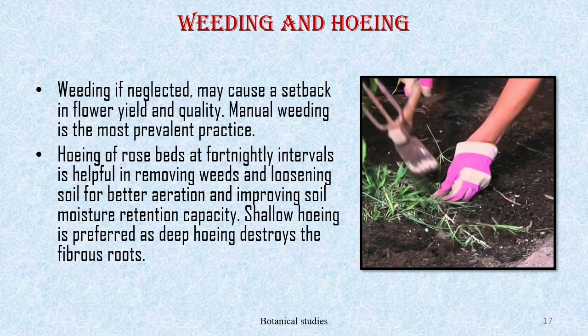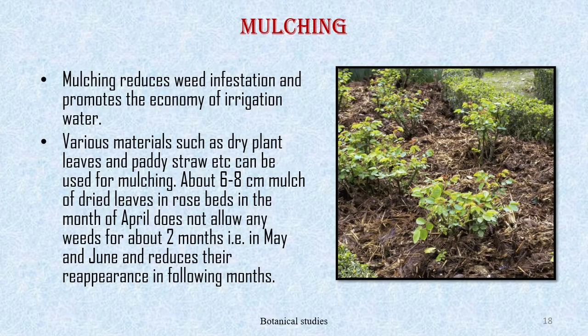Weeding and hoeing: weeding, if neglected, may cause a setback in flower yield and quality. Manual weeding is the most prevalent practice. Hoeing of rose beds at fortnightly intervals is helpful in removing weeds and loosening soil for better aeration and improving soil moisture retention capacity; shallow hoeing is preferred as deep hoeing destroys fibrous roots. Mulching reduces weed infestation and promotes economy of irrigation water. Various materials such as dry plant leaves and paddy straw can be used for mulching. About 6 to 8 cm mulch of dried leaves applied in April does not allow any weeds for about 2 months — May and June — and reduces their reappearance in following months.